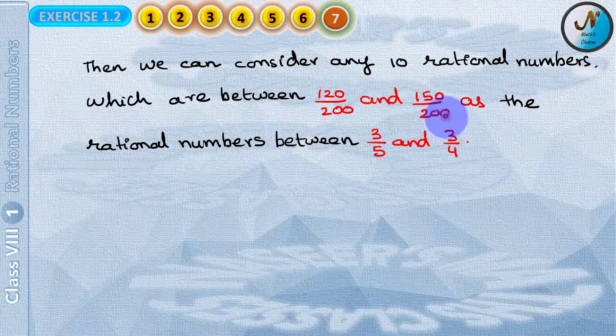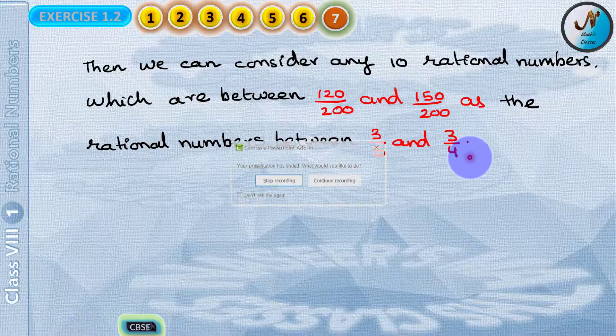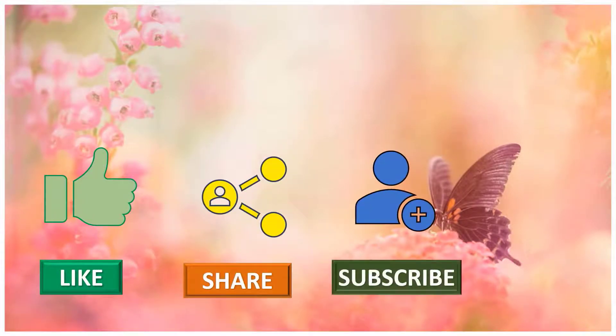Because 120 by 200 and 150 by 200 are the equivalent rational numbers of 3 by 5 and 3 by 4. Please like share subscribe our channel for latest updates by pressing the bell icon.